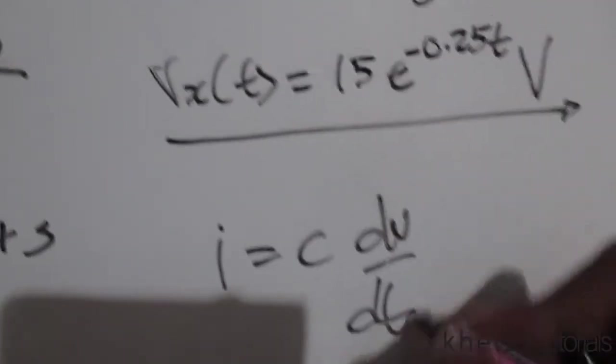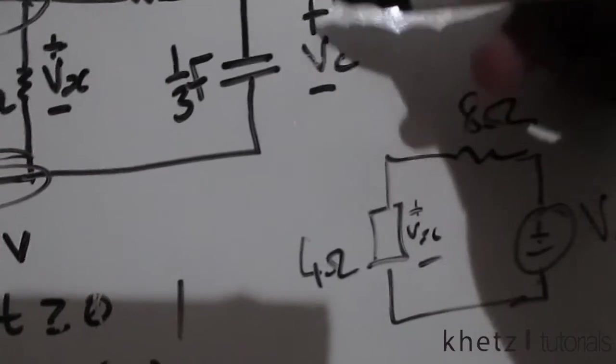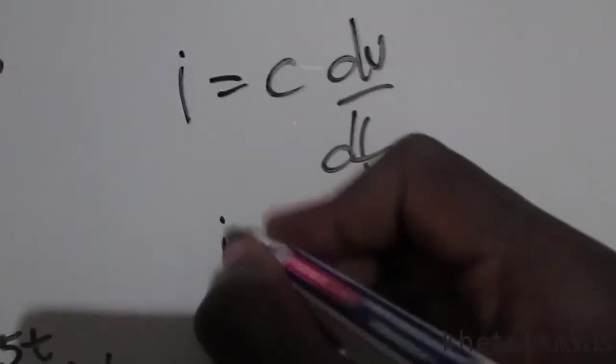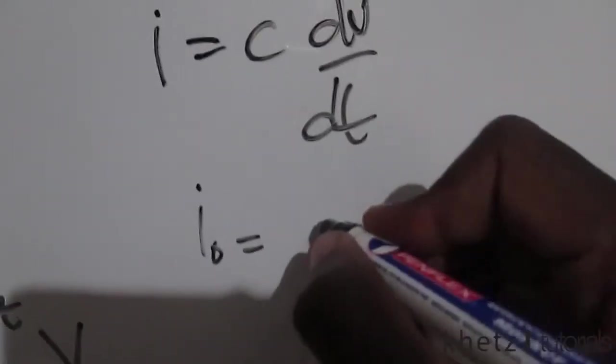We know for sure that i equals C dv/dt. We have the formula for Vc which is the capacitor voltage, so this is what we're basically going to do.